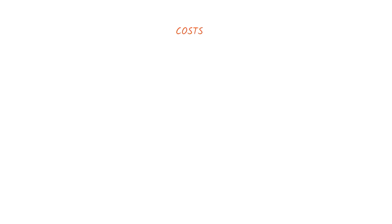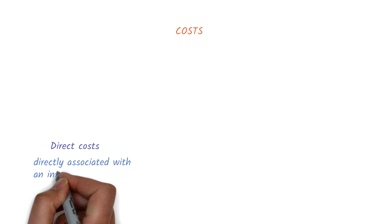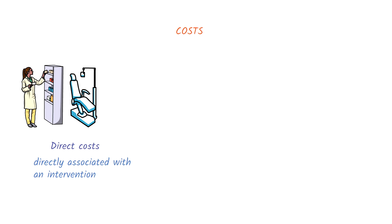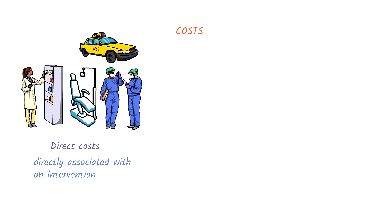Let's have a look at the different types of costs first. Direct costs are costs that are directly associated with the intervention. For example, the cost of medicines, the cost of equipment like x-ray machines, salaries of healthcare staff, or the cost of transport to the health center. Direct costs are the main focus of most economic evaluations.